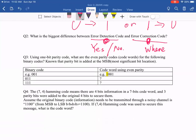So for the error correction code, we do not only detect the error. We also want to know the location of the error. And this way we could correct the error.